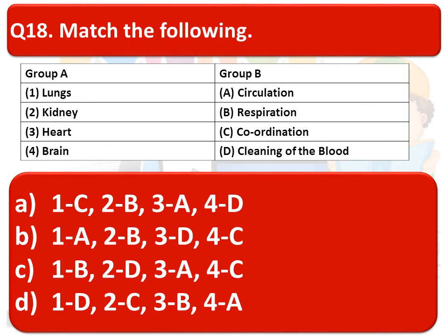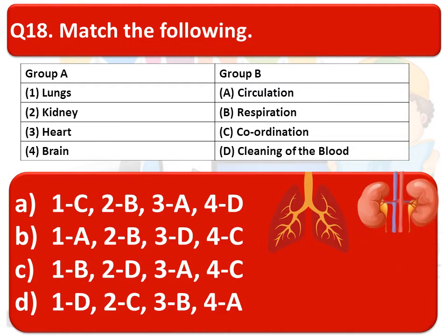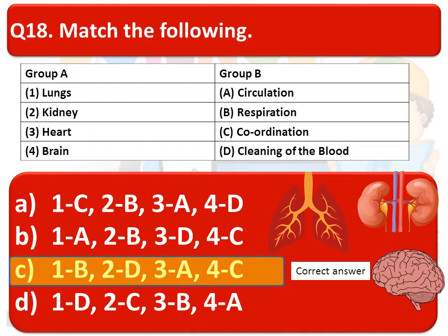Match the following: two groups are given — Group A contains body organs and Group B contains their functions. You have to make the correct match. The correct answer is Option C: lungs — respiration, kidney — cleaning of the blood, heart — circulation, and brain — coordination.